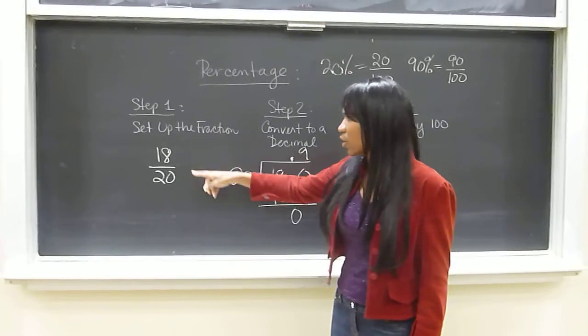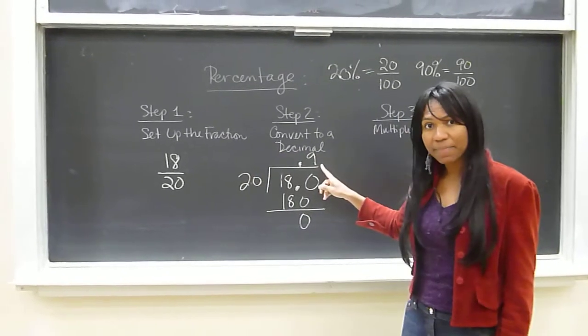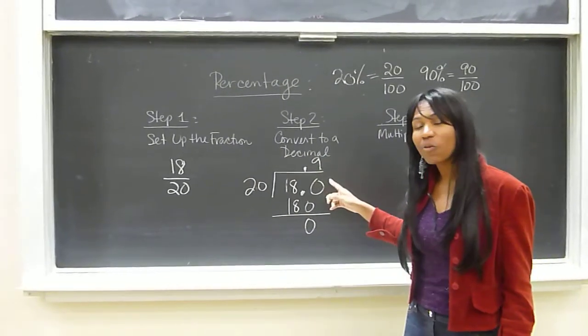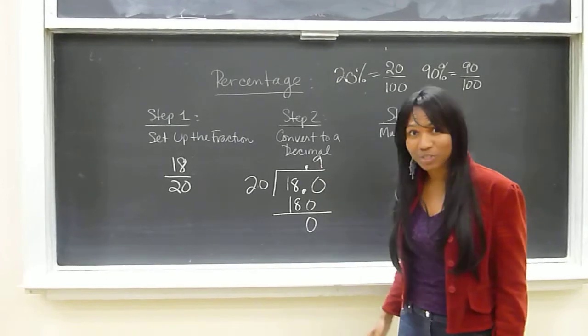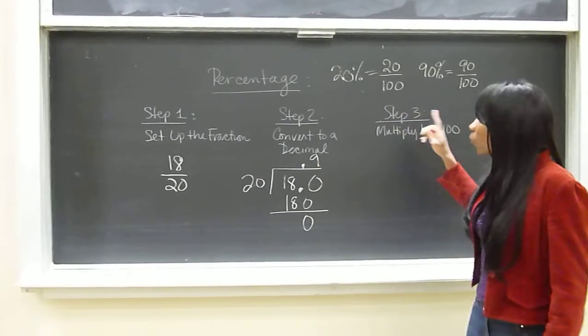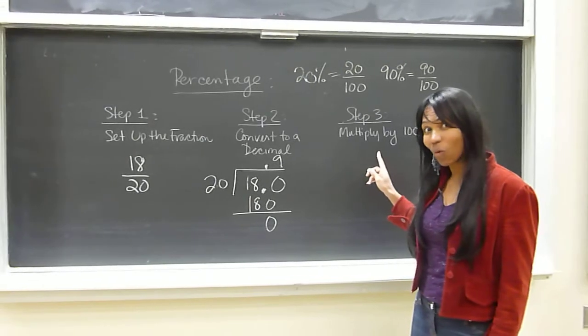Now 18 over 20 is the same thing as 0.9. But now we've got to make 0.9 a percentage. And there's an easy way to do that. We multiply 0.9 by 100.